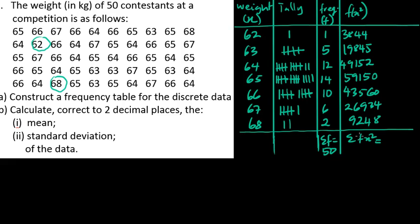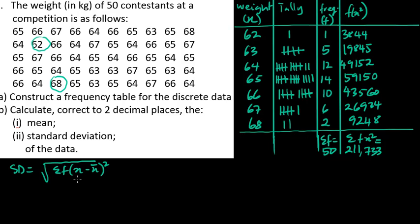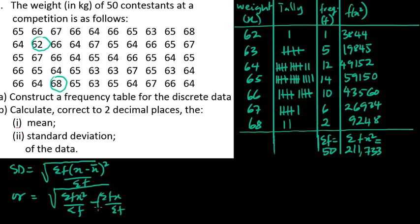The summation of fx² equals 211733. We have two formulas for standard deviation. You can use √(Σf(x−x̄)²/Σf), or the alternative: √(Σfx²/Σf − (Σfx/Σf)²). We'll use the second formula as it's faster.